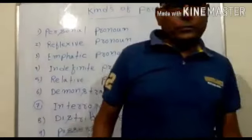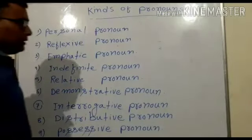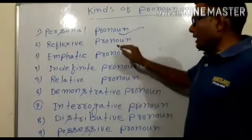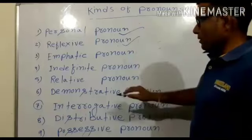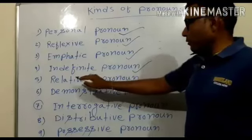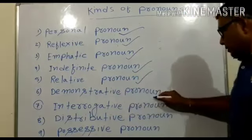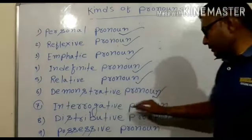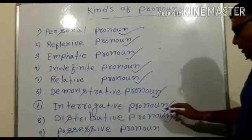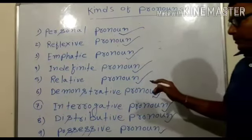Kinds of pronoun: There are nine kinds of pronoun. The first one is personal pronoun, second is reflexive pronoun, third is emphatic pronoun, fourth is indefinite pronoun, fifth is relative pronoun, sixth is demonstrative pronoun, seventh is interrogative pronoun, eighth is distributive pronoun, and the last one is possessive pronoun. Let us discuss them one by one.